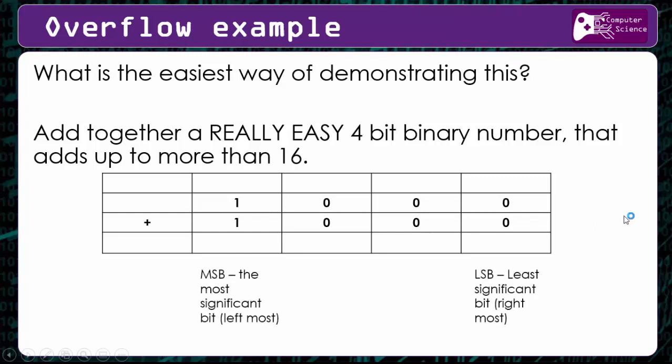there's two new terms that you need to be familiar with. You've got most significant bit, which is the left-hand most furthest bit. So you can see in this example here, the 1s are our most significant bit, they're the furthest to the left. And then you've got least significant bit, which are the ones furthest to the right. You just need to learn those two phrases for when you do your definitions.